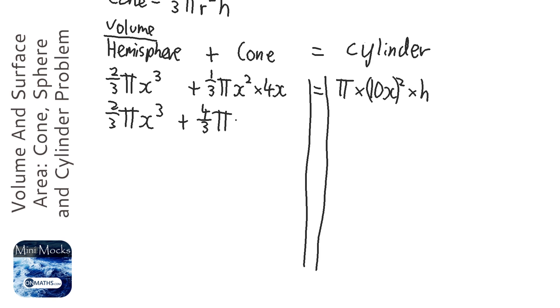Pi, and I'm timesing it by x, that's going to be x cubed. This one, I'm doing the 10x squared, so I need to square the 10 and the x, so it's going to be a hundred, and let's do the pi next, pi, and it's going to be x squared h.